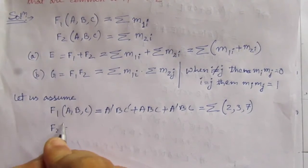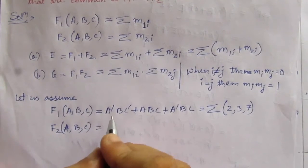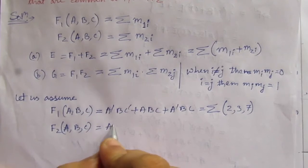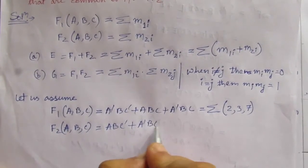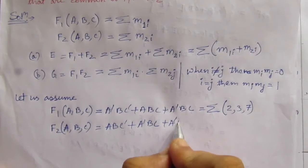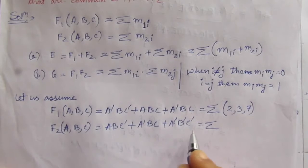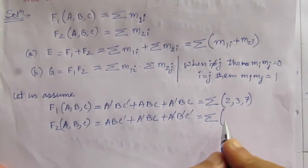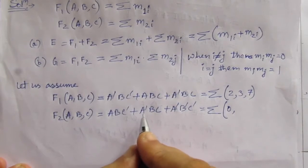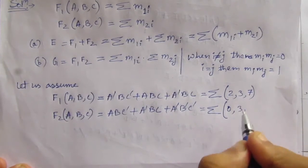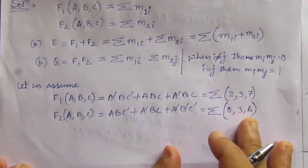Similarly, we have f2 of a, b, c equals a·b·c̄ plus ā·b·c plus ā·b̄·c̄. Here, ā·b̄·c̄ is minterm 0, ā·b·c is minterm 3, and a·b·c̄ gives 4 plus 2 equals minterm 6. So f2 equals summation of minterms (0, 3, 6).